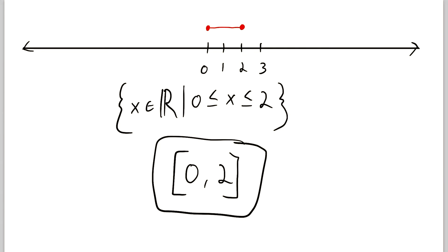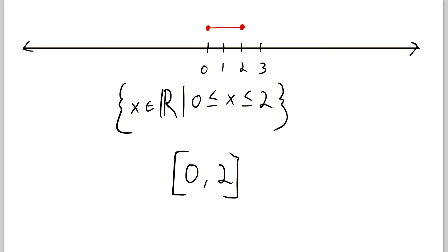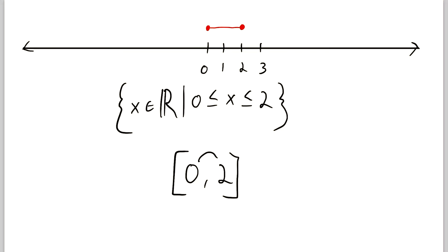So this is a closed interval from zero to two. We know that it's closed because of the square brackets — the square bracket tells us that we're including the endpoints. So again, this is the exact same thing as the set here: the set containing all real numbers that are between zero and two, as well as zero and two themselves.